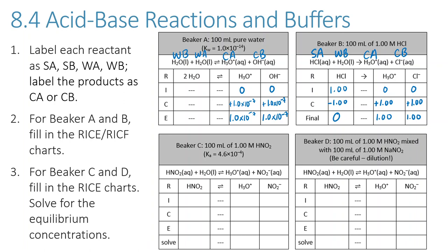Beaker C contains HNO₂, which is not one of the seven strong acids, so it is a weak acid. Water acts as a weak base, forming conjugate acid H₃O⁺ and conjugate base NO₂⁻. NO₂⁻ is called a conjugate base because in the reverse reaction it can accept an H⁺. Our initial concentration is 1 molar HNO₂, with no H₃O⁺ or NO₂⁻. We gain +x of each product and lose –x of HNO₂, giving equilibrium concentrations of (1–x), x, and x.